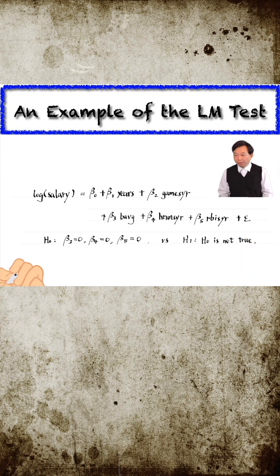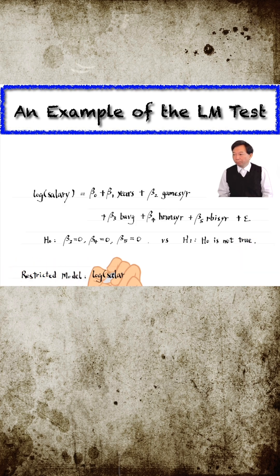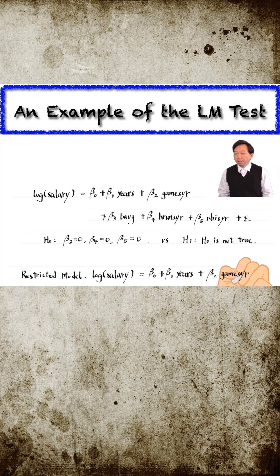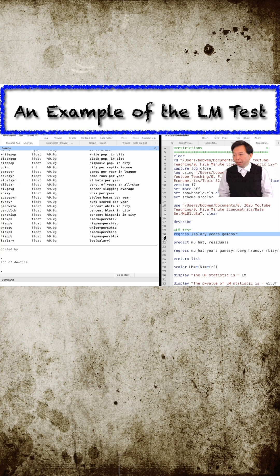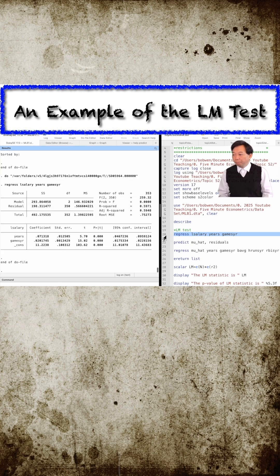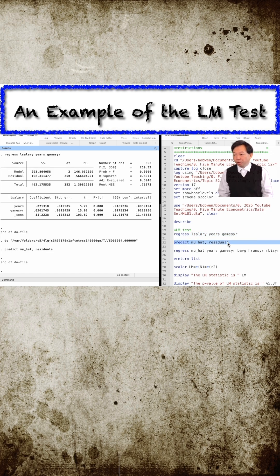In the first step, we estimate the restricted model — the model in which the exclusion restriction is imposed. The restricted model has only two explanatory variables. We save the residuals as a new variable mu-hat using the Stata predict command with the residuals option.